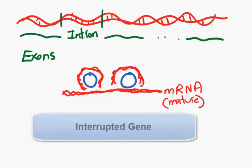This whole idea is called the interrupted gene, because the gene is interrupted with bits of non-coding DNA. And when I was at high school, it was just junk DNA. It did nothing.